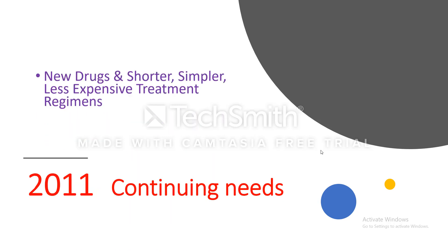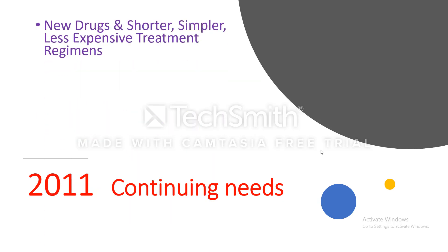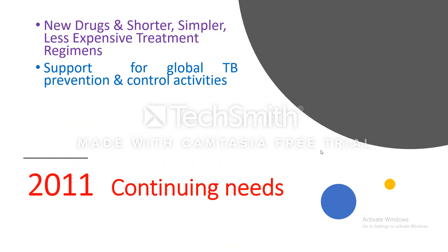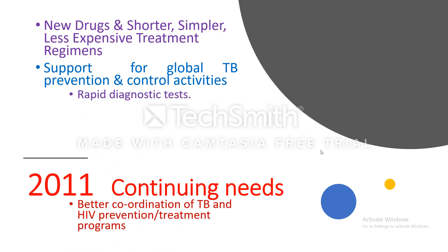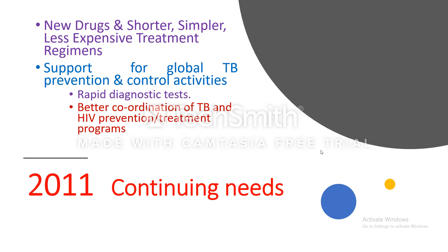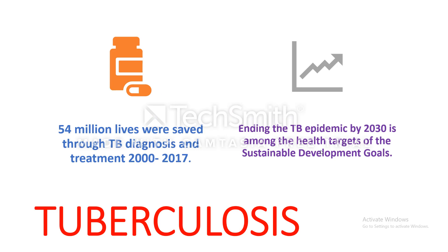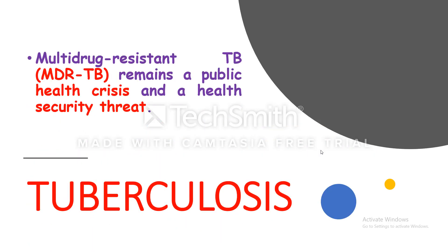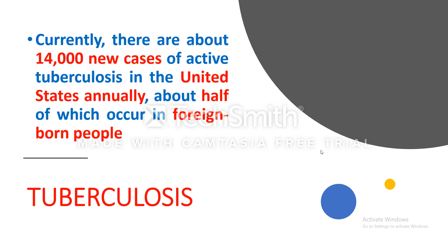Continuing needs include new drugs, shorter and less expensive treatment regimens, support for global TB prevention and control, rapid diagnostic tests, better coordination of tuberculosis and HIV prevention programs, and reliable access to TB drugs. 54 million lives were saved through TB diagnosis and treatment between 2000 and 2017. Ending the TB epidemic by 2030 is among the health targets of the Sustainable Development Goals. Multi-drug resistance remains a public health crisis and a health security threat. Currently there are about 14,000 new cases of active tuberculosis in the United States annually, about half occurring in foreign-born people.